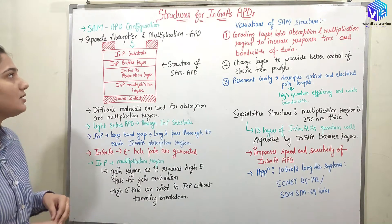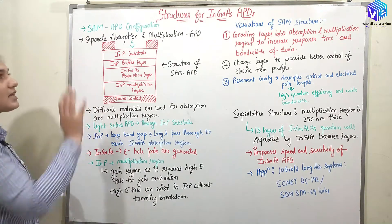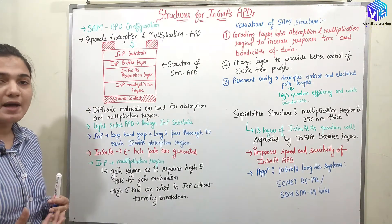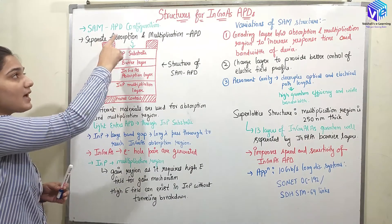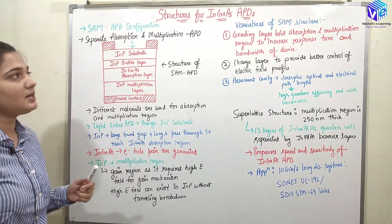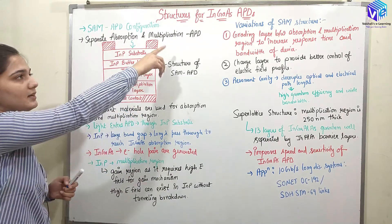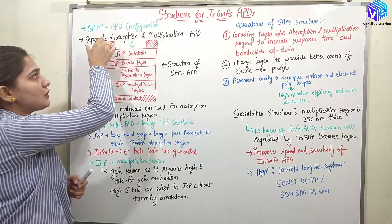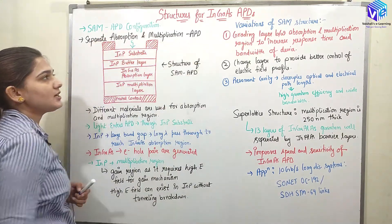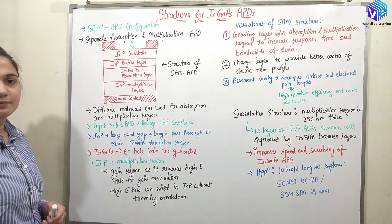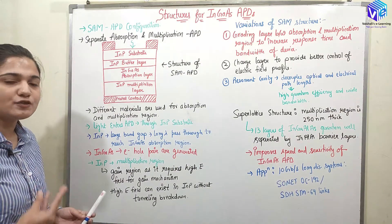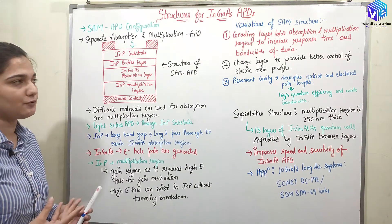Let's start our discussion with the SAM APD configuration. Why is it called SAM? We have the separate absorption and the multiplication material, so it is also called a separate absorption and multiplication APD configuration. APD, as I hope you know, stands for avalanche photodiode.